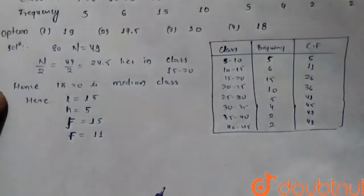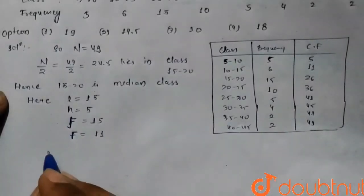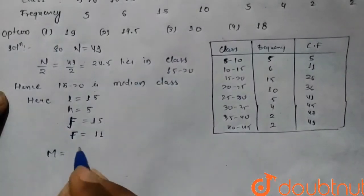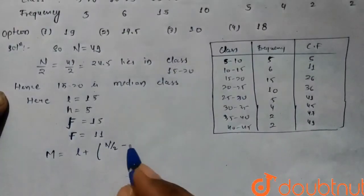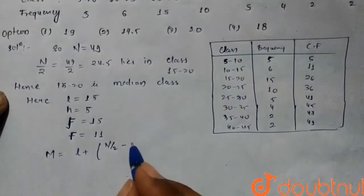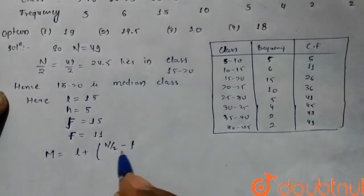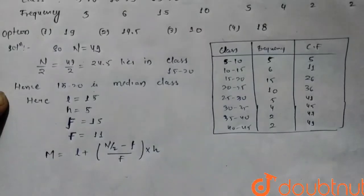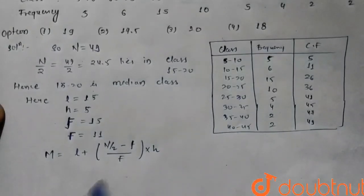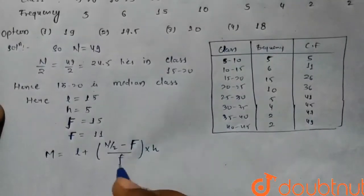So the formula says that the median is equal to L plus n by 2 minus F upon f into h. Here, this is capital F and this is small h.